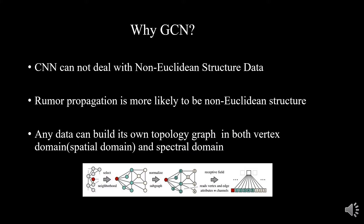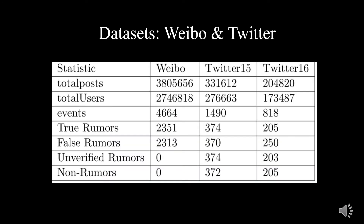Why do we choose GCN for rumor detection? First, CNN cannot deal with non-Euclidean structure data. In a topology graph, the number of each vertex and its neighbors may be different. Therefore, it cannot be computed with one fixed-size convolutional kernel. Since rumor propagation is more likely to be non-Euclidean in structure, and GCN is good at capturing features from such structure, GCN has also demonstrated strong performance in many graph tasks.